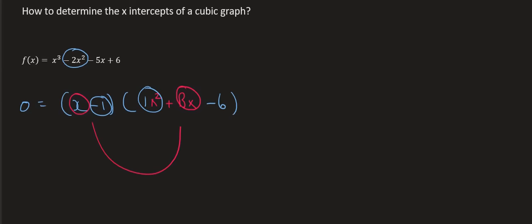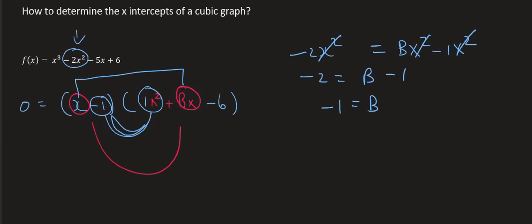So we can set up a little equation. We want the answer to be equal to minus 2x squared. That's what we can see there. And so that's going to be the combination of this one times by that one which is bx squared. And then this one times by that one which is going to be minus 1x squared. You can then ignore the x squares. And so we end up with minus 2 is equal to b minus 1. And so b is going to be equal to minus 1. There we go.